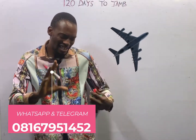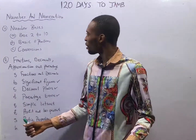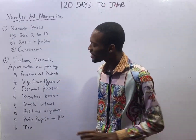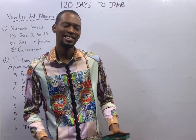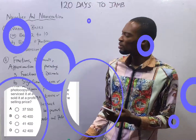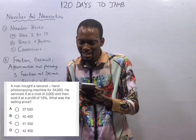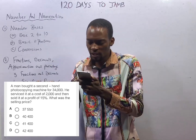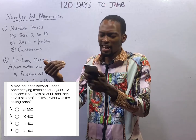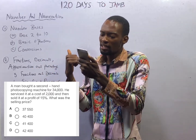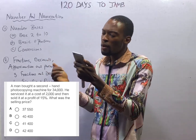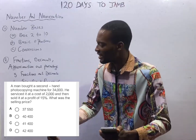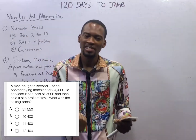Ladies and gentlemen, it is time to take off. You are welcome to episode number 4 of 120 Days to Jump Mathematics with Flash Isaac. In this episode, we shall be taking a look at this question, which says: a man bought a secondhand photocopy machine for $34,000. He serviced it at a cost of $2,000 and then sold it at a profit of 15%. What was the selling price — in other words, how much did he sell it?